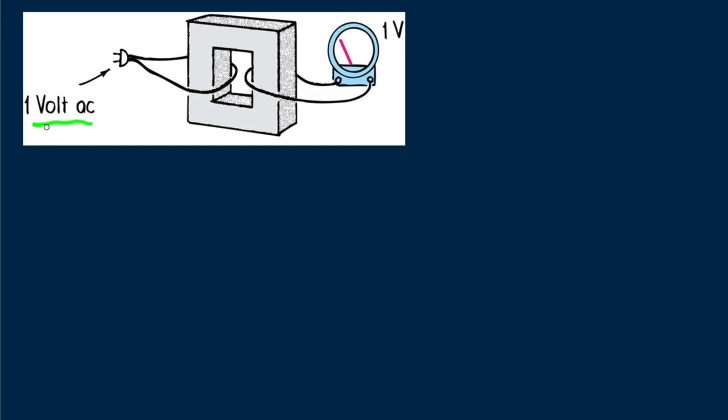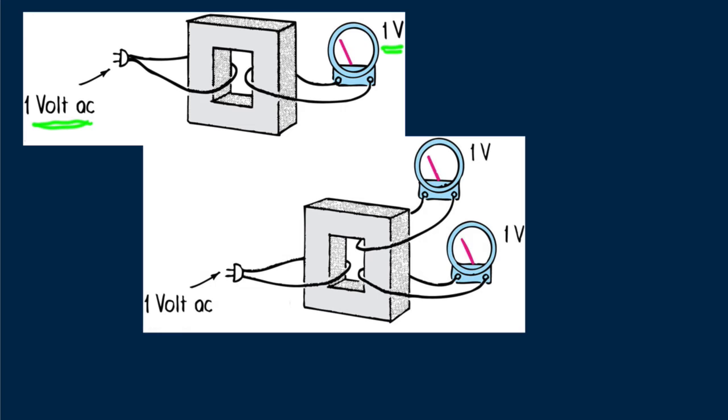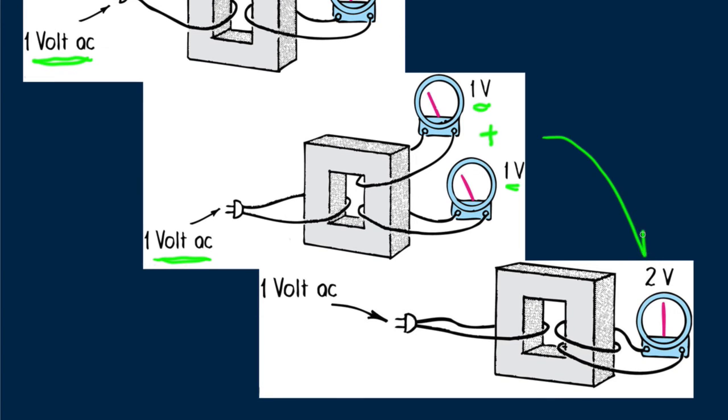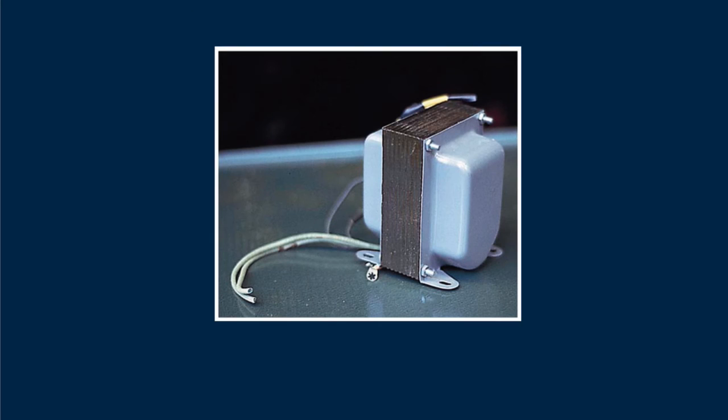Here the voltage input is one volt, and one volt is induced in the secondary. One volt is also induced in the added loop. Adding the two loops and the voltage induced in each, we see two volts induced in the double loop circuit. Makes sense. Study the details of transformers in your textbook. Here's a photo of one.